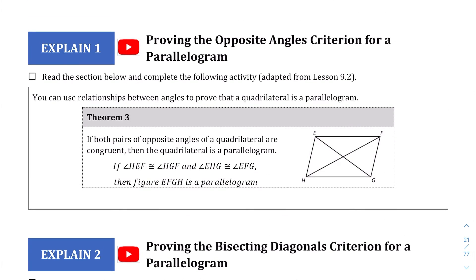Theorem 3 says that if both pairs of opposite angles are congruent, then the quadrilateral is a parallelogram. So I wish they didn't have these diagonals drawn here, but if this is congruent to this, that opposite angle, and if this angle is congruent to its opposite as well, then you have a parallelogram no matter what. So that's theorem 3.